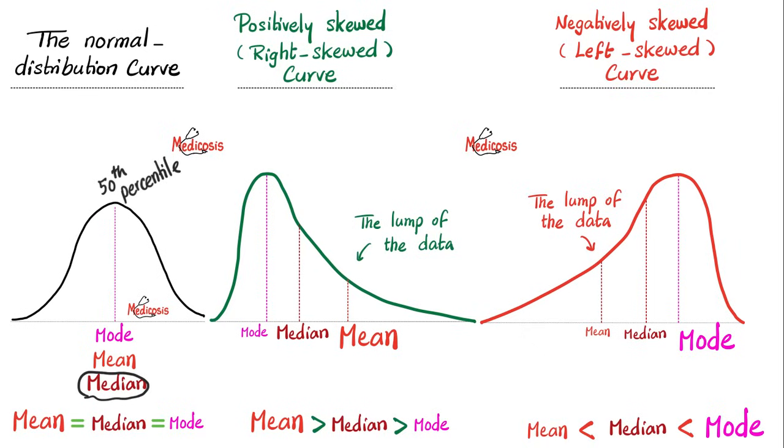But what if the curve is positively skewed? Then the mean is greater than the median, which is greater than the mode. Mean, greater than median, greater than mode. In this order. But when the curve is negatively skewed, or left skewed, then in this case, it's the opposite. The mode is greater than the median, which is greater than the mean. Or you can say that the mean is less than the median, and the median is less than the mode.